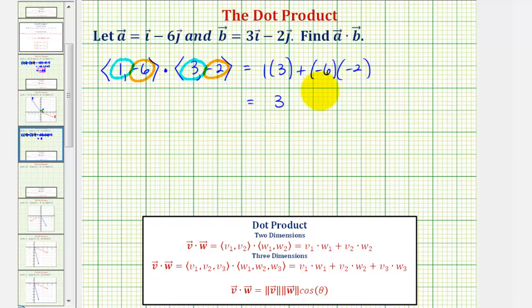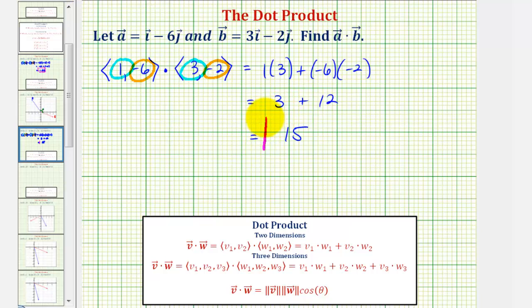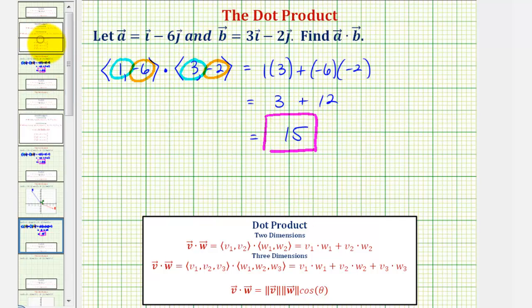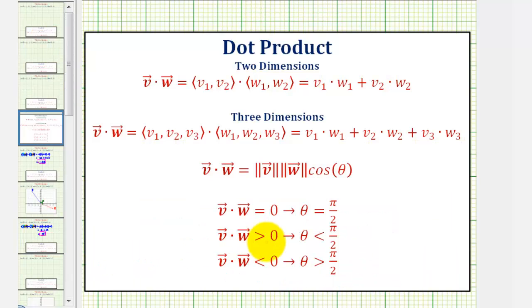That gives us three plus twelve, which is equal to positive fifteen. So because the dot product in this case is positive, the angle theta between these two vectors is less than pi over two radians.